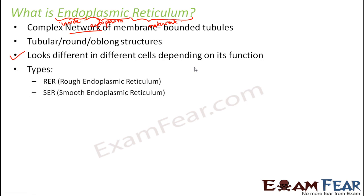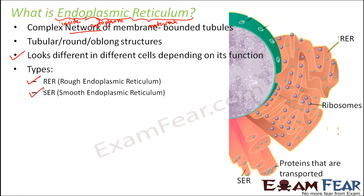They are of two types: rough endoplasmic reticulum and smooth endoplasmic reticulum. Looking at the structure, you see some leaf-like shapes, but actually these are tube-like structures — several tubes all connected to each other forming a network. This network is the endoplasmic reticulum.